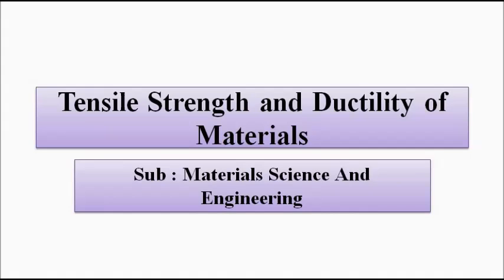So far in our discussion related to material science and engineering, in the previous videos we covered various introductory concepts and about the stress-strain curve and the various features and concepts associated with it. We discussed various points related to the stress-strain curve in short. In the next four or five videos, we will discuss the various points on the stress-strain curve in detail — each characteristic feature in detail. These characteristic features are associated with the general properties of materials for engineering applications. In this video, we are going to discuss tensile strength and ductility of materials.